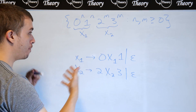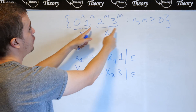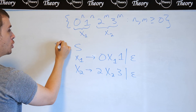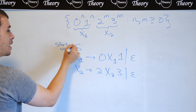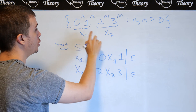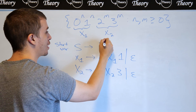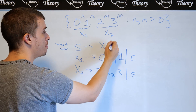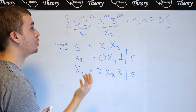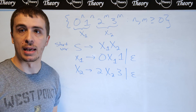How do we combine these? We follow the picture: X1 goes first, X2 goes second. So the start variable S produces X1 X2 — whatever X1 makes concatenated with whatever X2 makes. Therefore this is a complete grammar for this language.